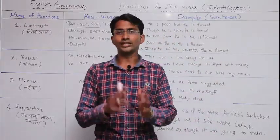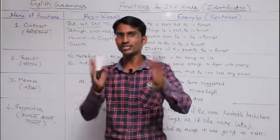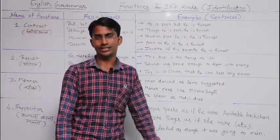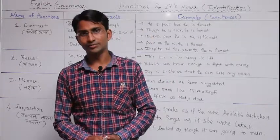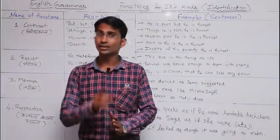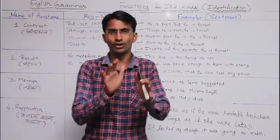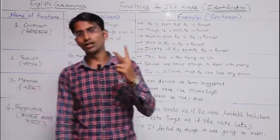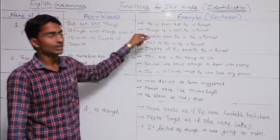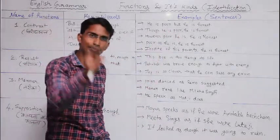Let us understand contrast with examples. Since contrast means 'opposite,' here is one example: 'He is poor but he is honest' — meaning he is poor yet honest. You can see these two sentences are opposite. We use 'but,' 'yet,' or 'still' here. Next, using 'though': 'Though he is poor, he is honest.' The difference is that 'but' comes between two sentences, while 'though' comes at the beginning of the sentence.